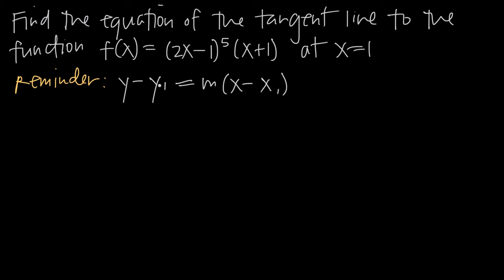Here we have the formula in point-slope form for the equation of a line. In point-slope form, we have three values to pay attention to: the value of m, which is the slope of the line, and then x sub 1 and y sub 1, which together are a point on the line. We've been told the point is at x equals 1, so we just need to find the corresponding value of y by plugging x equals 1 into the original function to find the y value at that point.